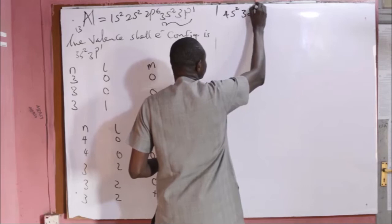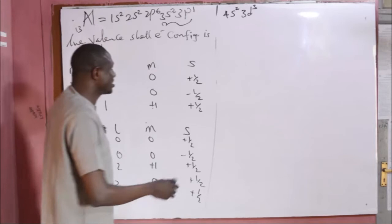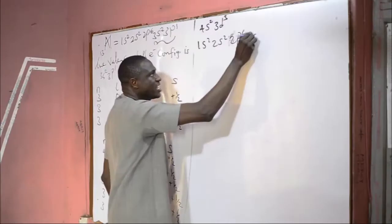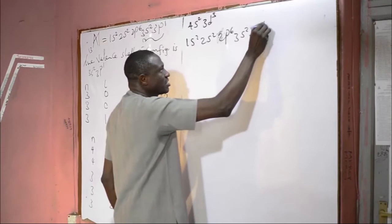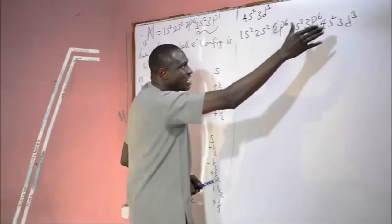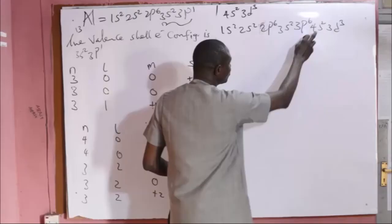The valence shell electronic configuration is 4s2, 3d3. To write the full electronic configuration using the Aufbau principle, you start from 1s2: 1s2, 2s2, 2p6, 3s2, 3p6, 4s2, 3d3. If you add all the electrons together, the total is 23, which gives you the atomic number. That element is vanadium.